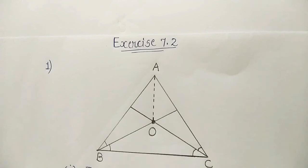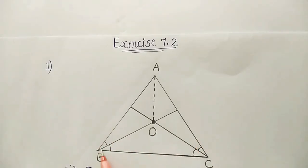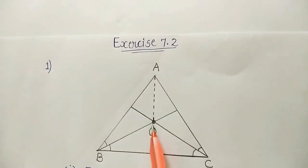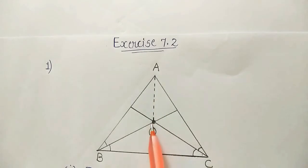In an isosceles triangle ABC. The figure is not given, we will draw. This is an isosceles triangle ABC with AB equal to AC. The bisector of angle B and bisector of angle C both intersect each other at O. It is asked to join AO. We have to prove that OB is equal to OC, and also that AO is the bisector of angle A.